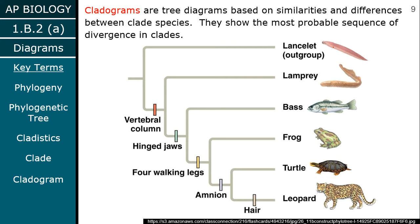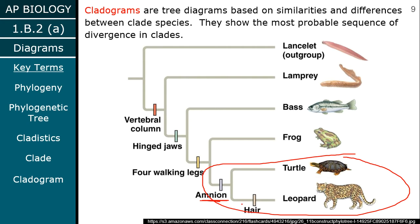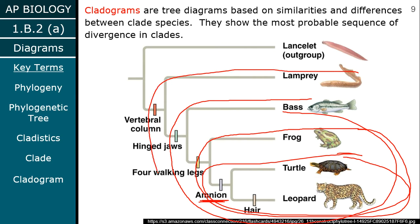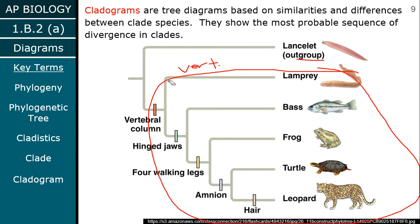Cladograms allow us to look at different groups. Here I have a clade of amniotes — the turtle and leopard both make amniotic eggs. I also have a clade of tetrapods with four walking legs, a clade of hinged jaws, and a clade of vertebrates. There's always going to be an outgroup — in this case, the lanceolate. Everything inside the outermost circle is a vertebrate, sharing a vertebral column.